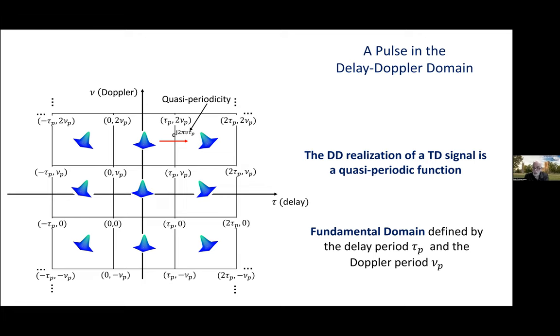Now, the phase of the pulse changes when the pulse location shifts by an integer multiple of tau_p along the delay axis. No change in phase when the pulse location shifts by an integer multiple of nu_p along the Doppler axis. And this kind of delay-Doppler domain pulse is a type of signal that behaves as if it was localized in time and frequency.